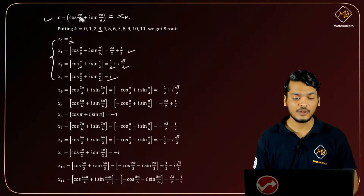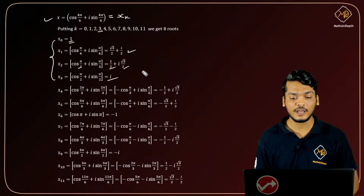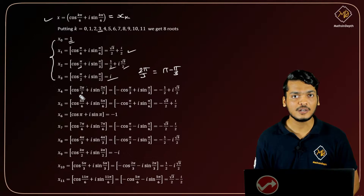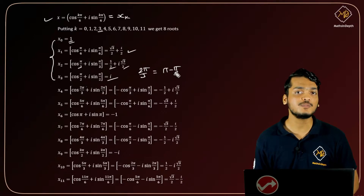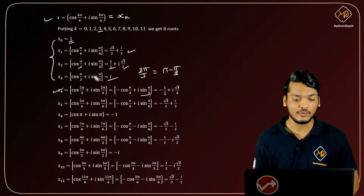For k = 4: after cancellation we get cos(2π/3). Now 2π/3 = π - π/3, so cos(π - π/3) = -cos(π/3) and sin(π - π/3) = sin(π/3). Since cos(π/3) = 1/2 and sin(π/3) = √3/2, the 5th root is -1/2 + i·(√3/2).